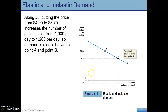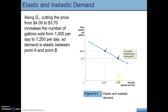Here's an example of using that price elasticity formula. If the price falls from $4.00 to $3.70, and then quantity goes up from 1,000 to 1,200, this demand is going to be elastic between points A and B. You can calculate it out — new minus old, making sure you line up: old price at $4.00, old quantity at 1,000, new price at $3.70, new quantity at 1,200.